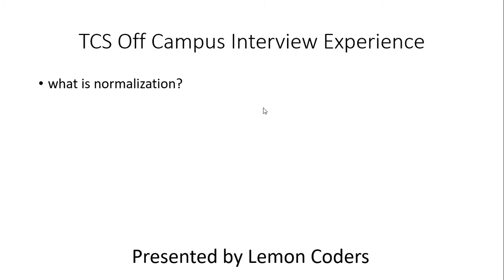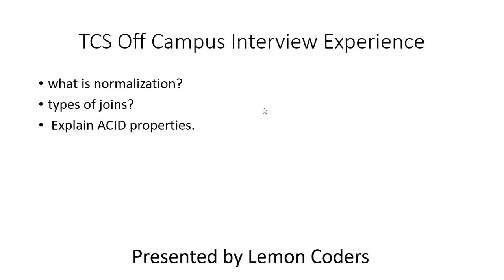Then they asked about DBMS: what is normalization? Here you have to tell all the types of normalization, give the definition, and explain each type in one line if the interviewer allows. Then they asked about types of joins — there are many types like inner join, outer join, full outer join, left outer join, and right outer join — you have to prepare and answer those accordingly.